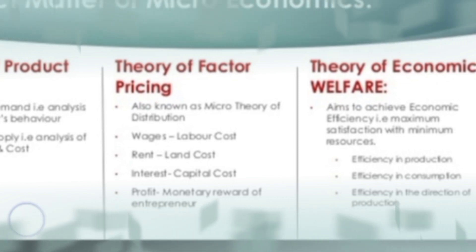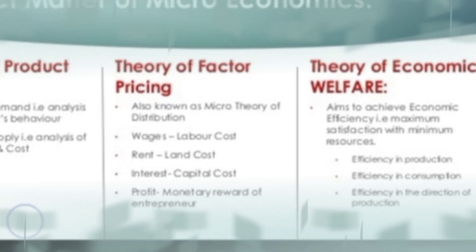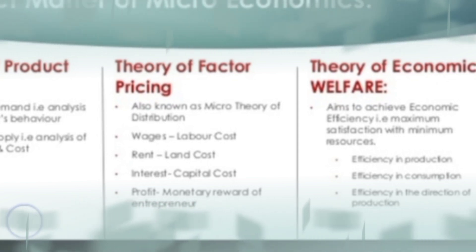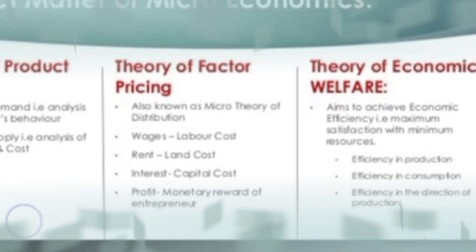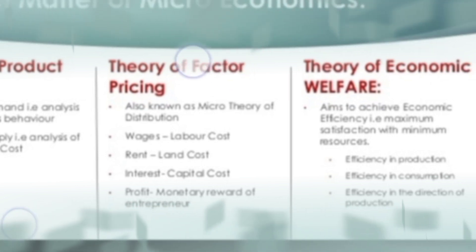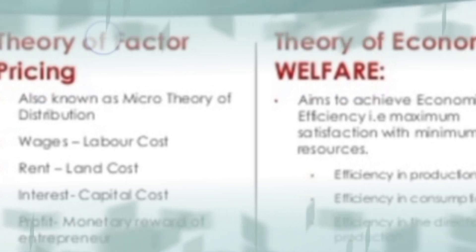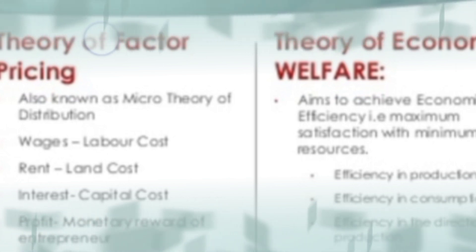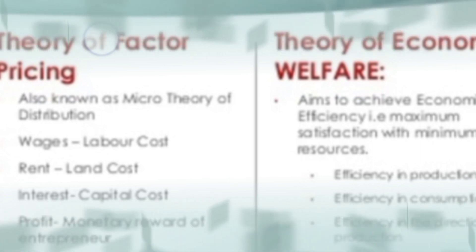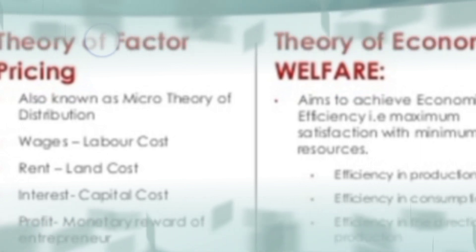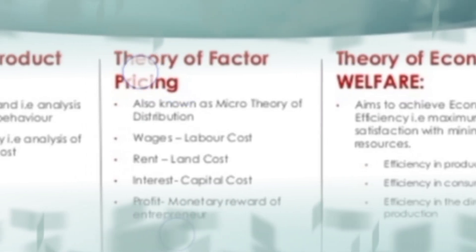The third part is the theory of economic welfare, which comes under economic efficiency. Economic efficiency means the overall optimum utilization of resources and reducing wastage. The welfare of a country depends on three conditions: efficiency in production, efficiency in consumption, and overall economic efficiency in the direction of production. Production refers to the supply or seller's point of view; consumption refers to the consumer or demand point of view; and optimum utilization of resources means properly distributing resources and reducing wastage. All three parts form the subject matter of economics.